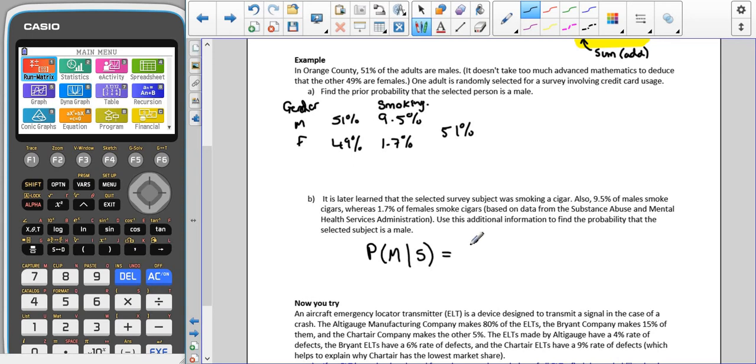Using Bayes' theorem, that means that we're going to do the probability that they were male, times the probability that they are a smoker, given that they are male, divided by the probability that they are male, times the probability that they are a smoker, given that they are male. Notice that that's exact same as what's on the top. Plus the probability that they are female, times the probability that they are a smoker, given that they are female.